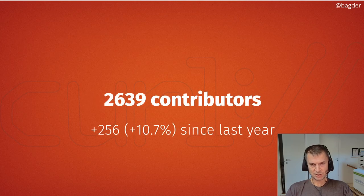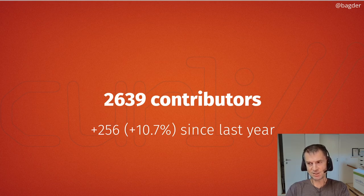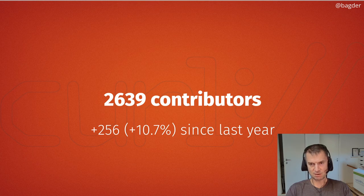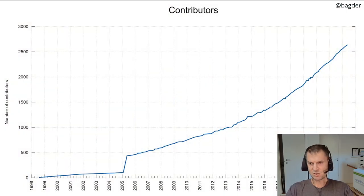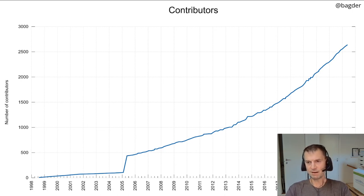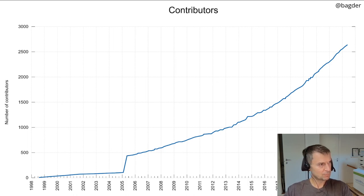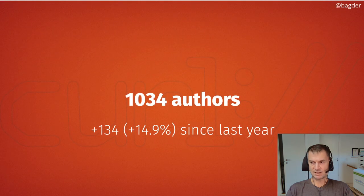We keep a contributors list — anyone reporting a bug, writing a commit, or suggesting something we give credit for. We added 256 names to the list last year, a 10% increase, with over 2,600 names now. This is slowly accelerating — going faster over the last few years — which shows that people are still interested and a lot of people are helping out. That's one of the powers of curl.